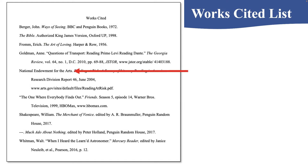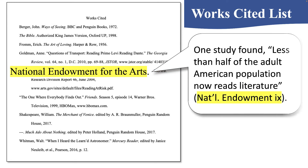Let's look at some other examples. Here we have a source — the National Endowment for the Arts — this is not the name of an author. So in my essay, 'one study found, less than half of the adult American population now reads literature.' It is acceptable to abbreviate. We don't need to include the entire phrase 'National Endowment for the Arts,' so in my parenthetical citation I just have 'National Endowment.' And because the page appears as Roman numeral 9 in the source document, I keep that Roman numeral in my parenthetical citation.